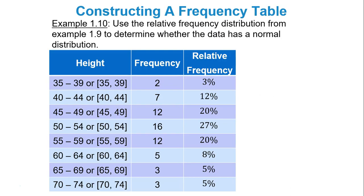So for instance, I have here displayed a completed frequency table here. This is the frequency table we made with the heights with the students. Use the relative frequency distribution from the previous example to determine whether the data have a normal distribution. So in this specific case, look at your frequencies. Do they start low? Do they get high, and do they get low again?